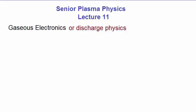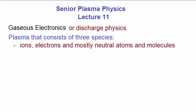Most plasmas generated on Earth consist of three species. That is, you have the ions and the electrons, but they're mostly made up of neutral atoms and molecules. In fact, the densities of electrons and ions are a very small fraction of the densities of the neutral atoms and molecules.